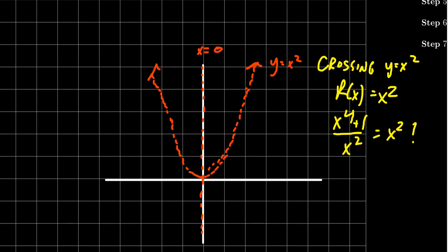Clear the denominator, we're going to times both sides by x squared, we get x to the fourth plus 1 is equal to x squared times x squared, that's x to the fourth. Notice the x to the fourth is cancel, you get 1 equals 0, which is false. So, this tells us that, in fact, there will be no crossings of this oblique asymptote.